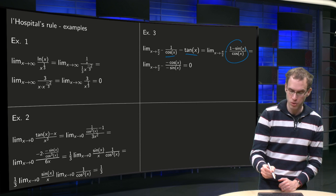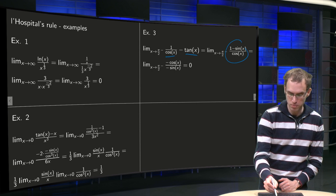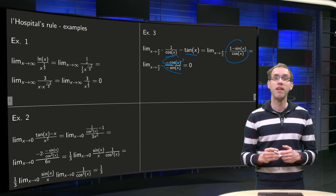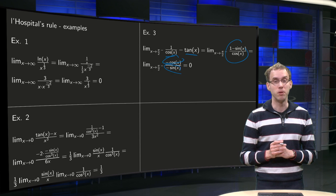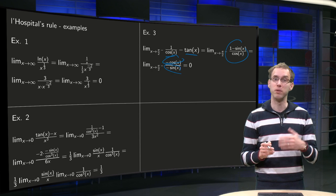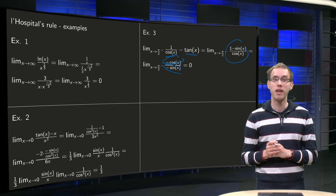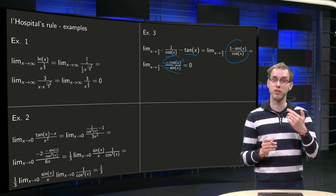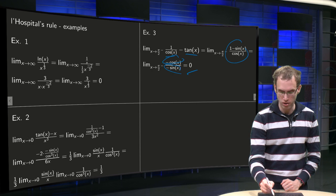Apply L'Hopital's rule. The derivative of the minus sine equals minus the cosine, derivative of the cosine equals minus the sine. And then we can take x to pi over 2, no problem anymore, because we have cosine of pi over 2 equals 0, and sine of pi over 2 equals 1, so we have 0 over 1 equals 0 for our limit.